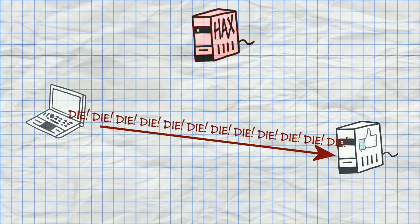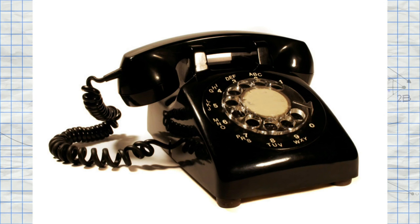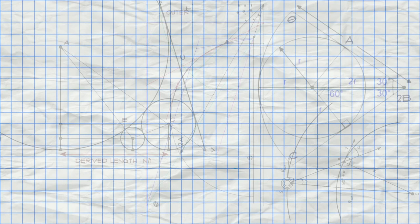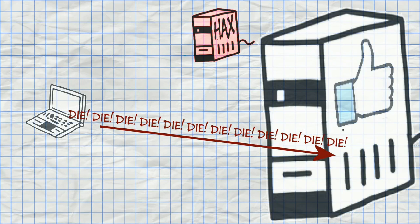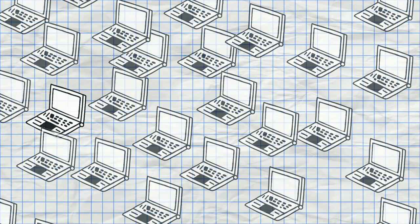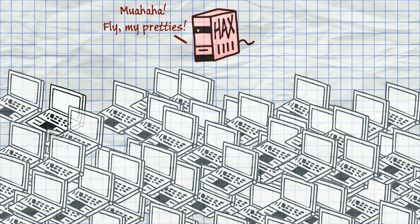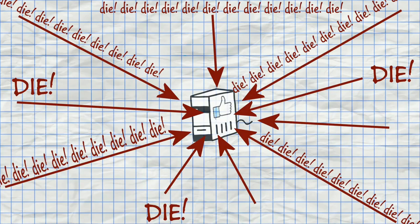The server will usually reply 'Nope, keep doing what you're doing,' but sometimes it will issue an order like 'Go overwhelm facebook.com.' The user's computer will then begin to pelt Facebook with meaningless requests, not caring about the answer — the only goal is to keep the Facebook server busy so it can't serve anyone else. It's like calling someone over and over and hanging up, so anyone else who tries to call just gets a busy signal. One single hacked computer is harmless, but what if there were thousands of them all under the command of a single hacker?